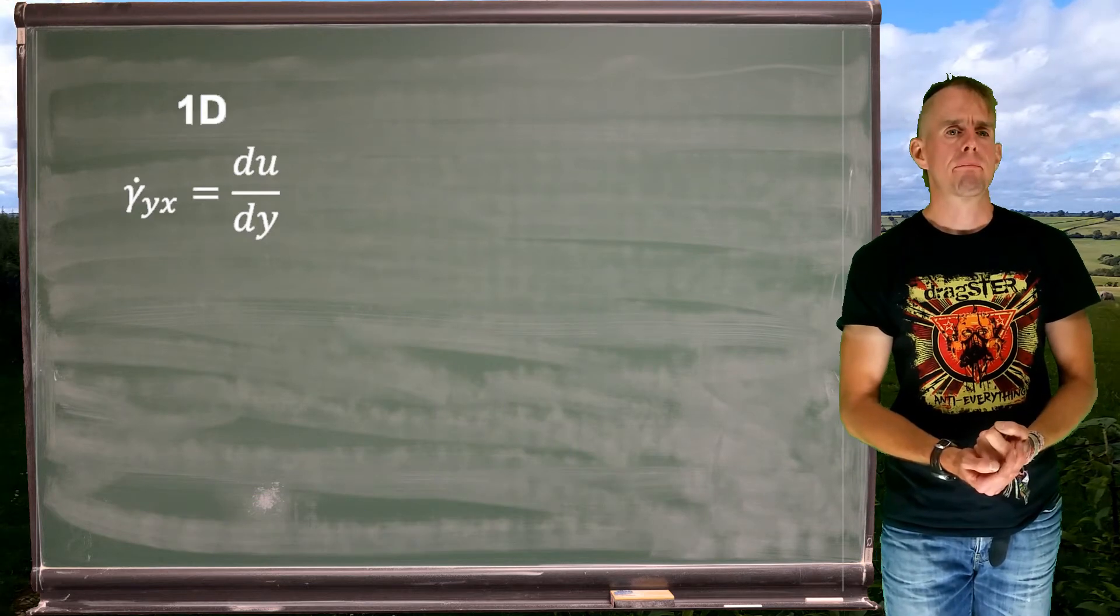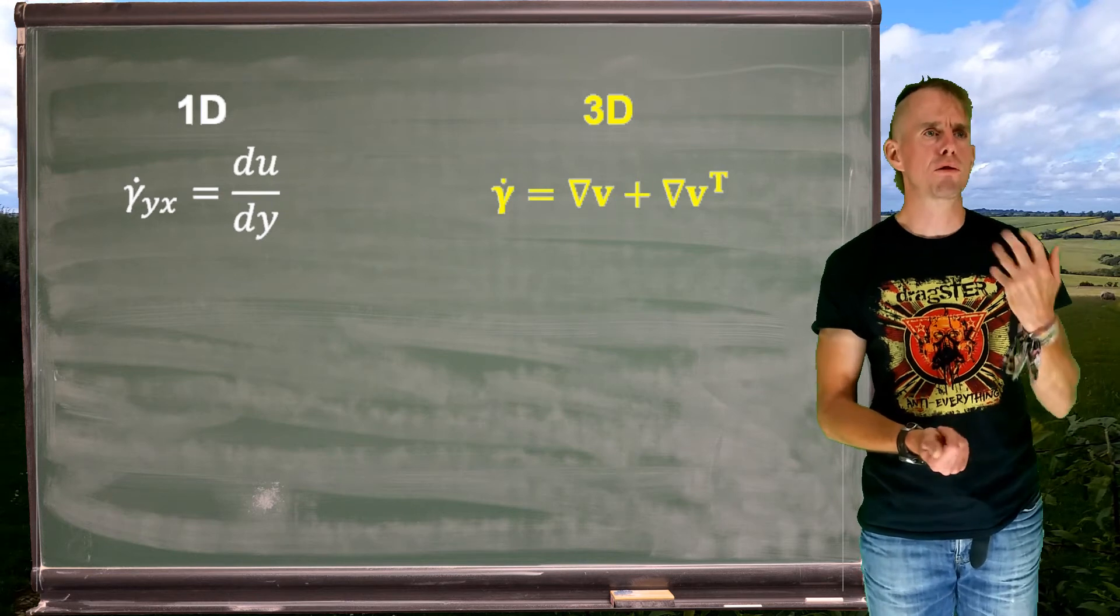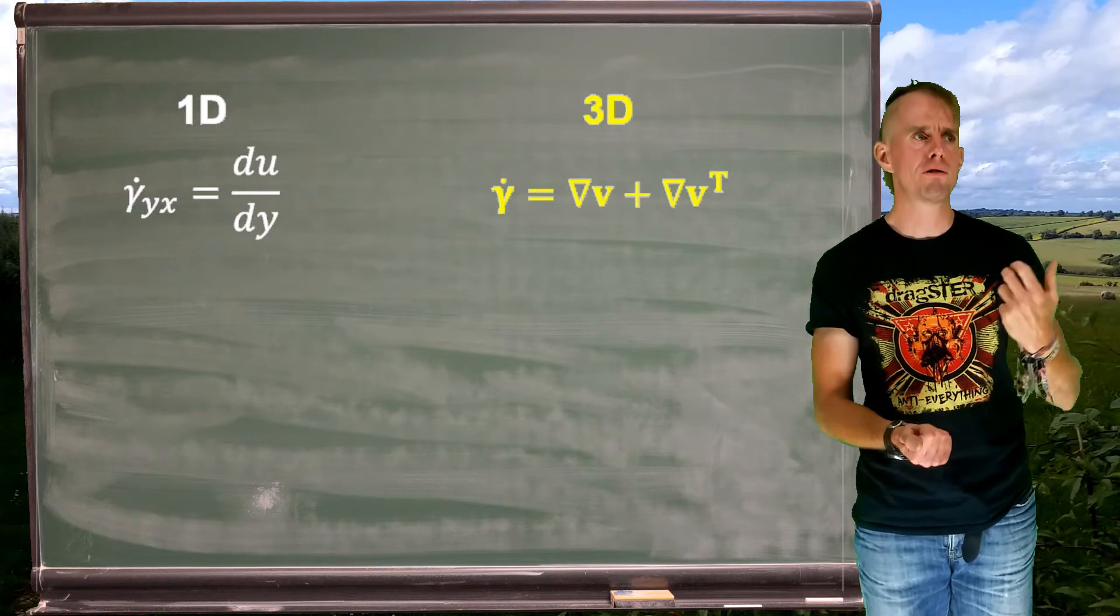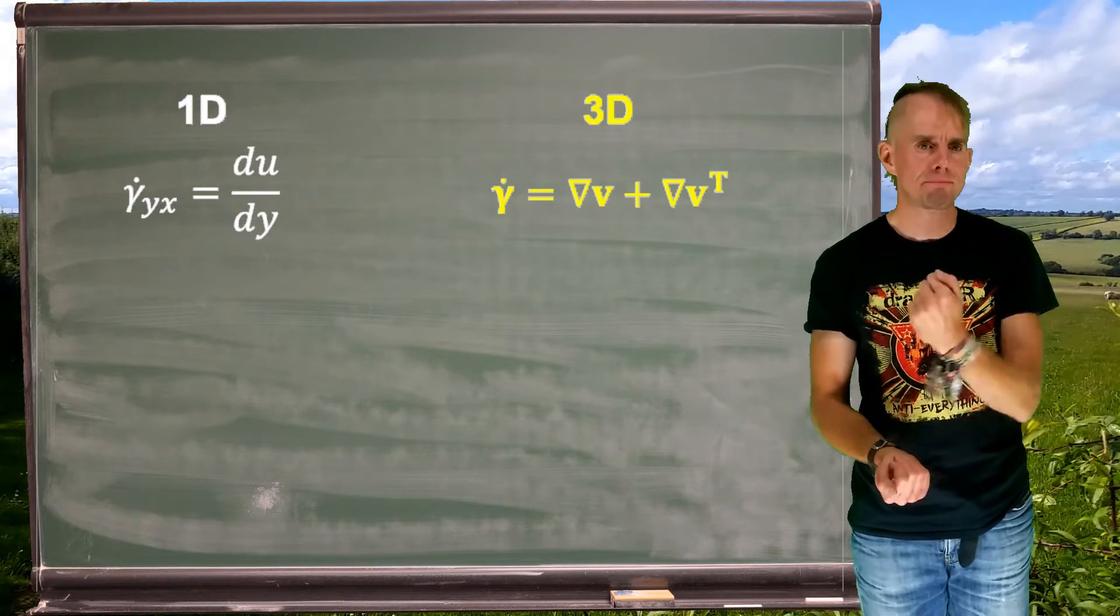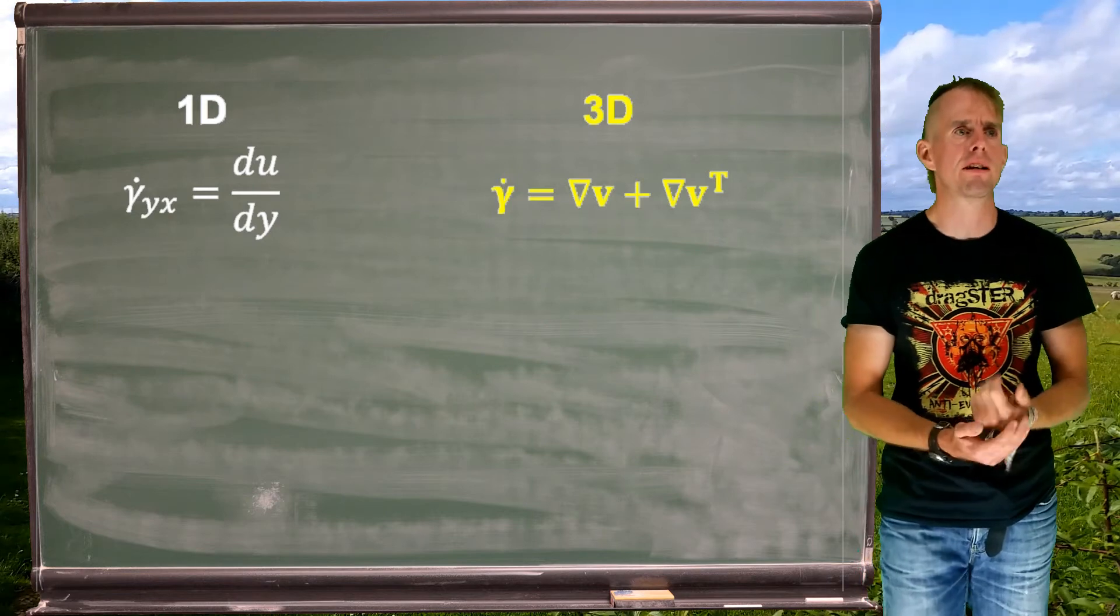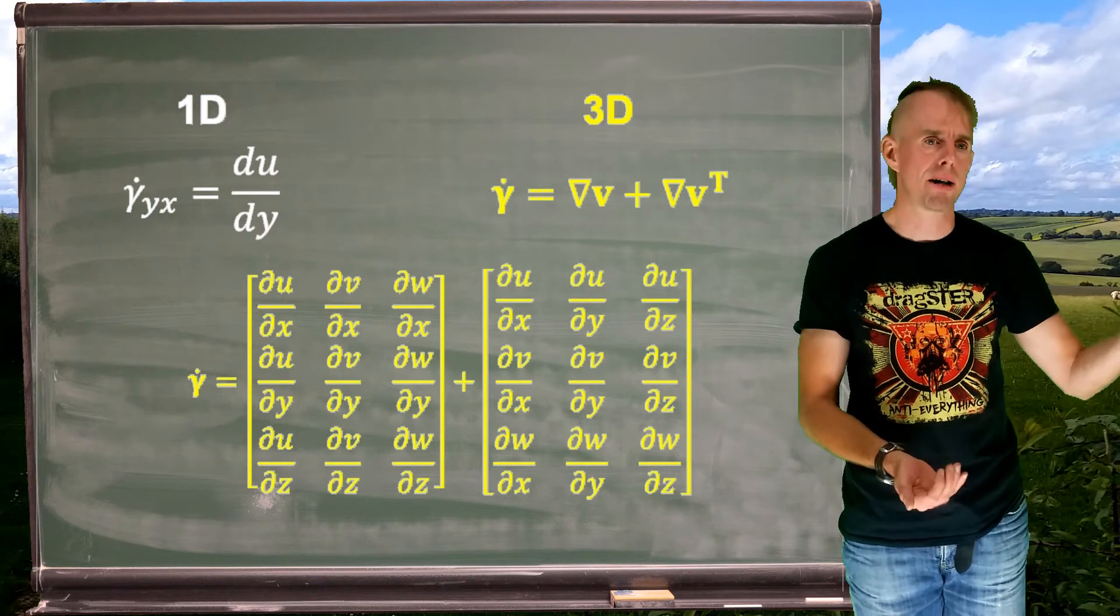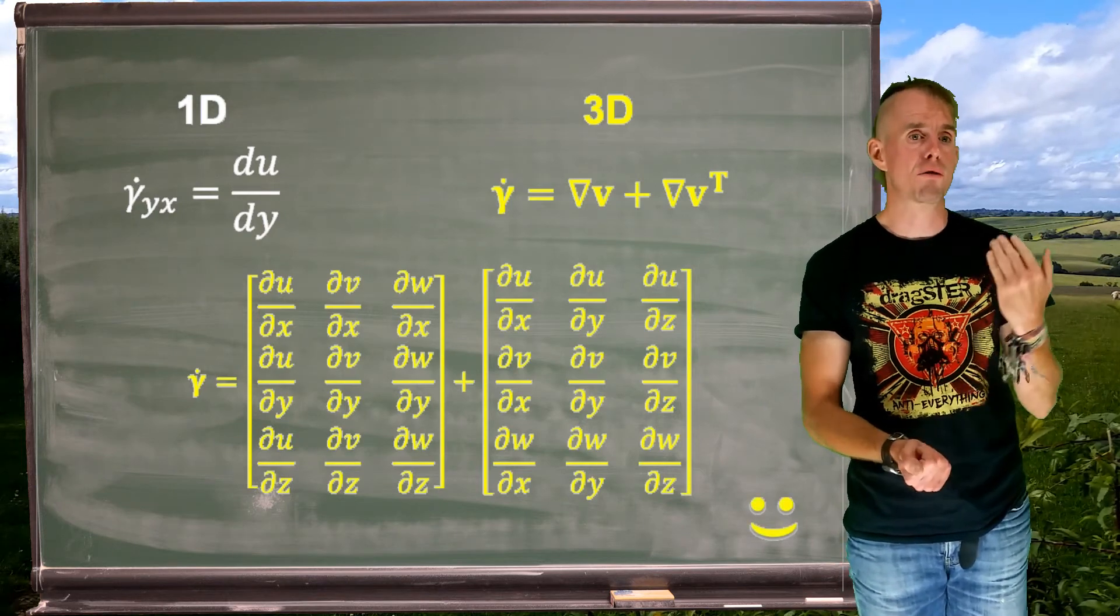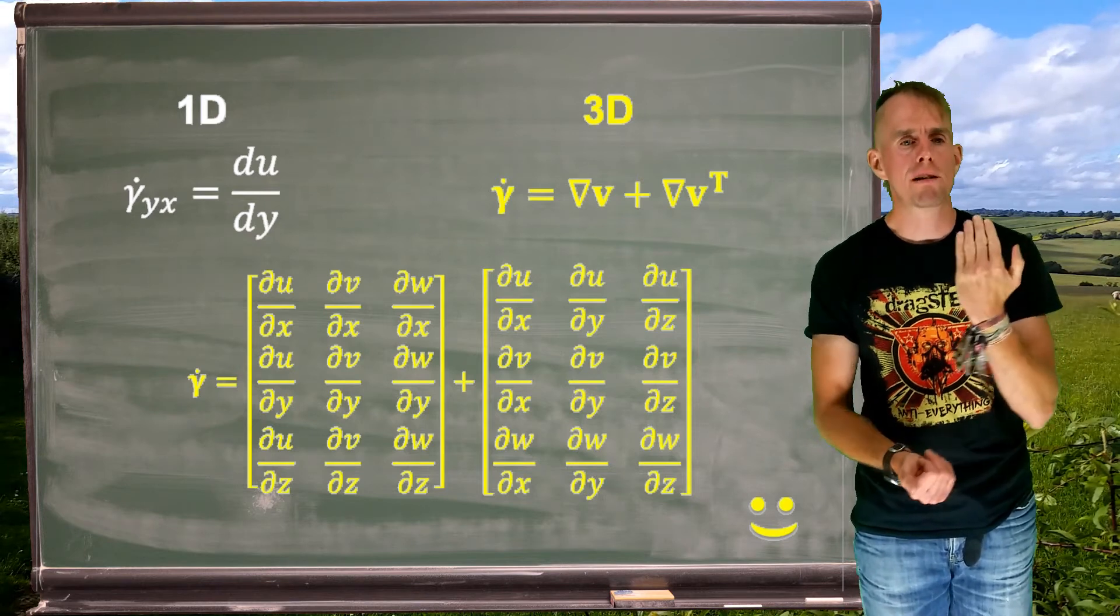Let's propose something different. Let's say that what we actually have is gamma dot tensor equals grad v plus its transpose. Now remember that a transpose of a matrix or a tensor is where you swap the rows and columns around. So let's see what this looks like if we expand it out in longhand. On the left-hand side, gamma dot, my rate of strain tensor, is equal to two parts now. Grad v, expanded out in full as that first tensor. Grad v transpose, we can see it's that first tensor with the rows and the columns swapped about.